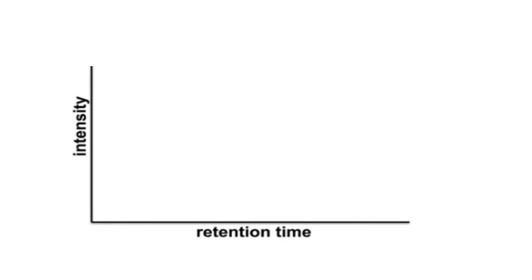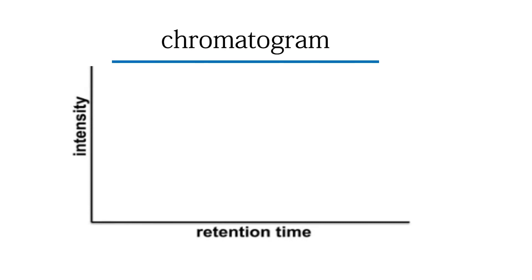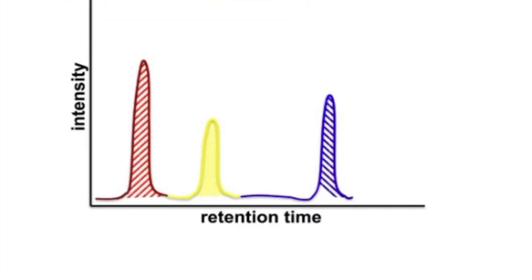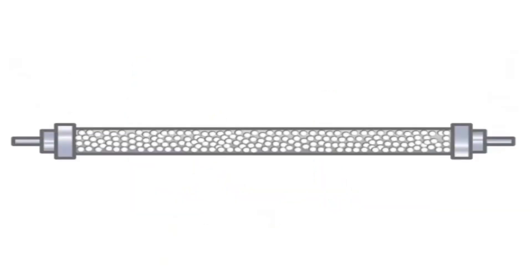The result is a plot of retention time versus intensity, or a chromatogram. The retention time is used to identify the component. The peak size, specifically the area under the peak, is used to quantify the amount of the compound in the initial solution.